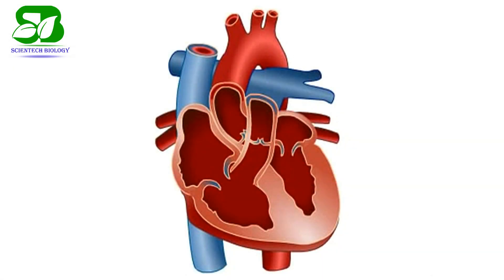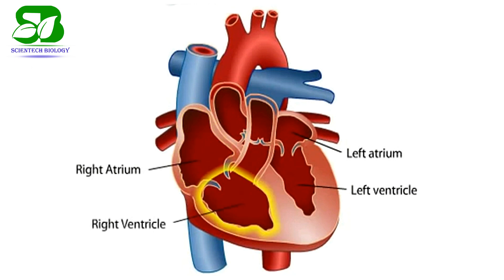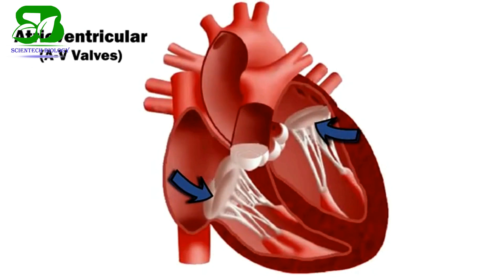A human heart consists of four chambers: the left atrium, left ventricle, right atrium, and right ventricle. The two upper chambers called atria receive blood, and the two lower chambers called ventricles pump out the blood. Each chamber of the heart is separated by cardiac muscles and valves.